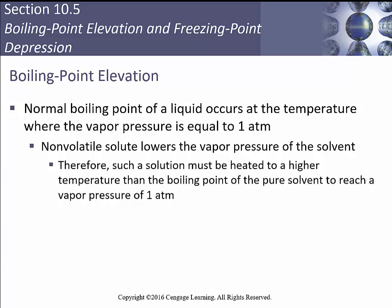The normal boiling point of a liquid occurs at the temperature where the vapor pressure equals one atmosphere — it's called 'normal' because we assume one atmosphere is standard. In a hyperbaric chamber under high pressure, the boiling point would be higher; at high elevation where atmospheric pressure is lower, it would be lower. Non-volatile solutes are going to lower the vapor pressure of the solvent.